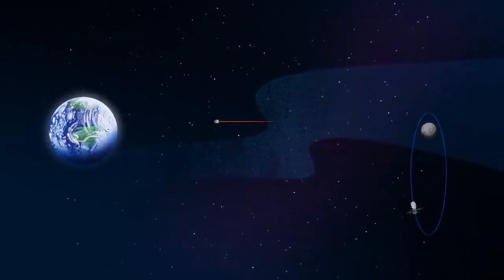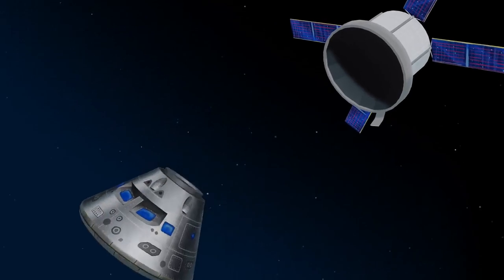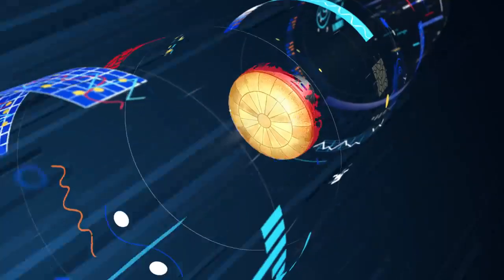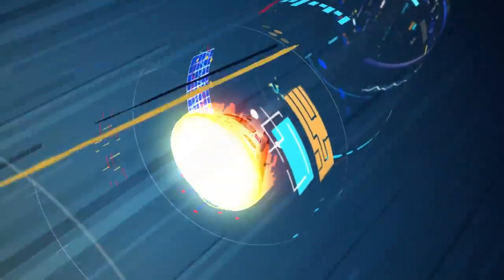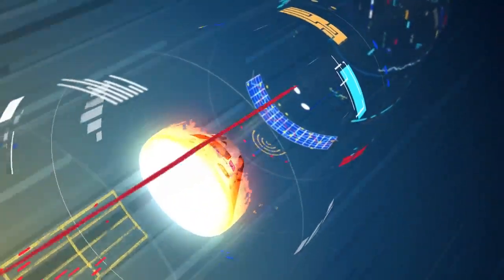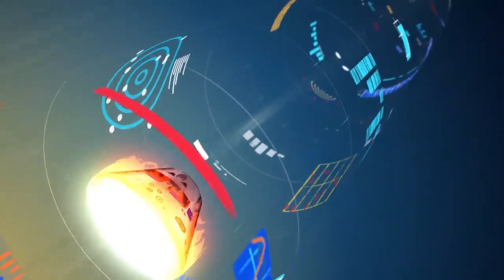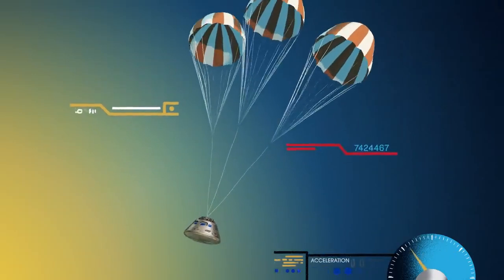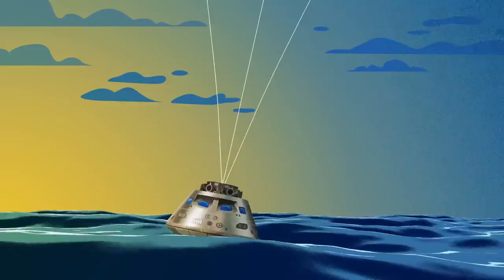As they near the end of this journey, the service module is released, and the crew module is oriented heat shield first. Entering Earth's atmosphere at 25,000 miles per hour, the friction of air slows Orion considerably, while also subjecting it to temperatures of 5,000 degrees. With the Orion now at just 300 miles per hour, a series of parachutes uniquely tested and produced for this moment deploy, decelerating the craft to just 20 miles per hour for splashdown.